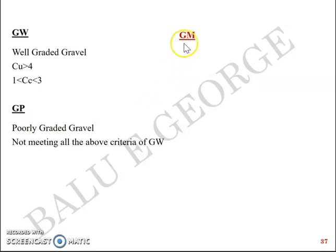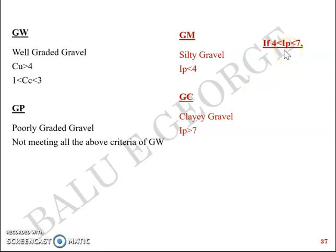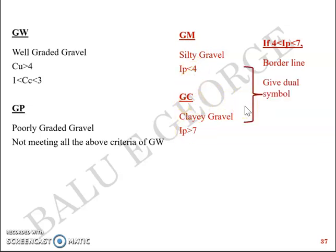Analogously, GM is silty gravel (M for silt, G for gravel) when Ip is less than 4. GC is clayey gravel when Ip is greater than 7. If Ip falls between 4 and 7, it's a borderline classification and you give it the dual symbol GM-GC. So if less than 4 it's GM, if greater than 7 it's GC, and if between 4 and 7 you use the dual symbol GM-GC.